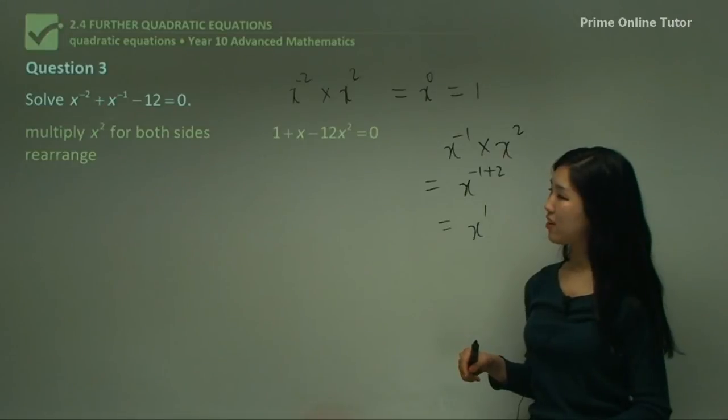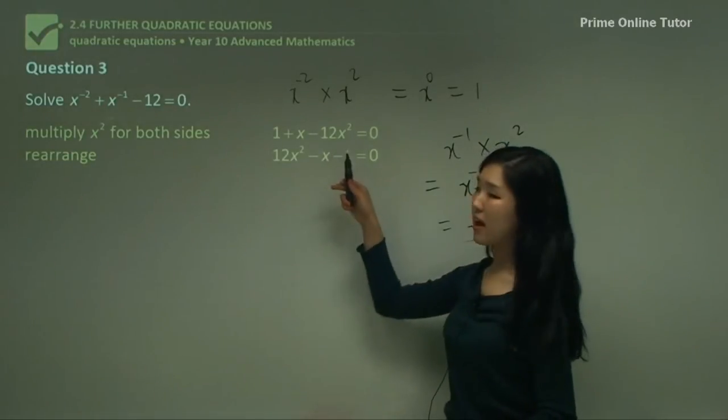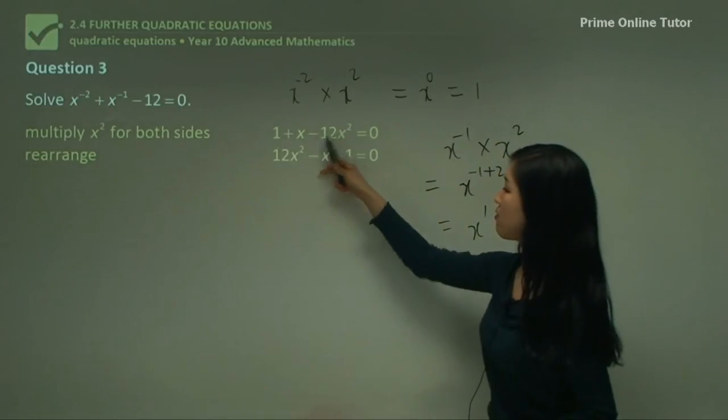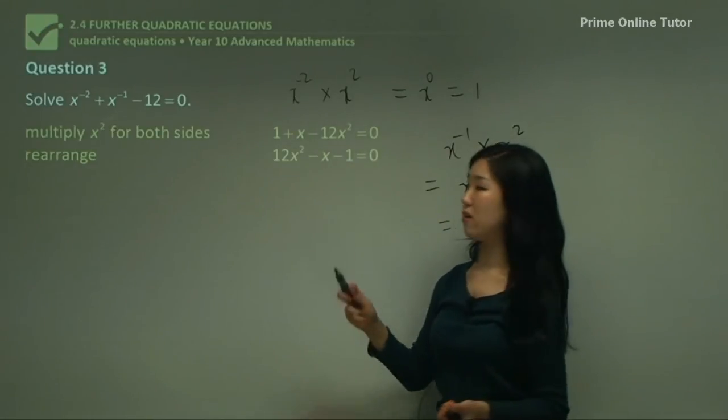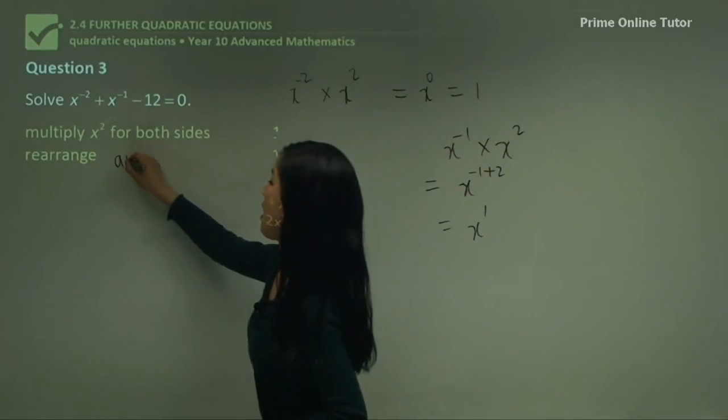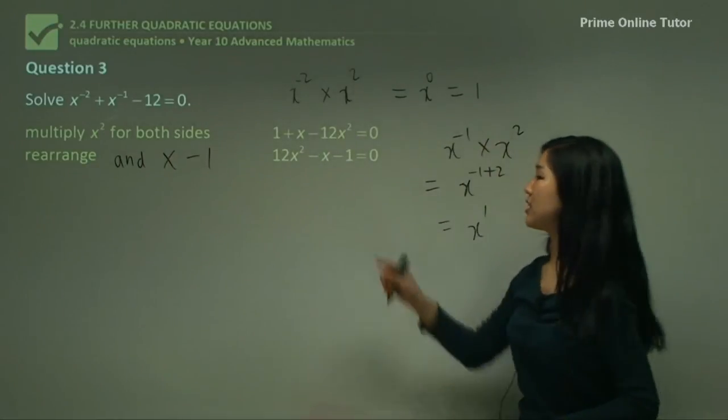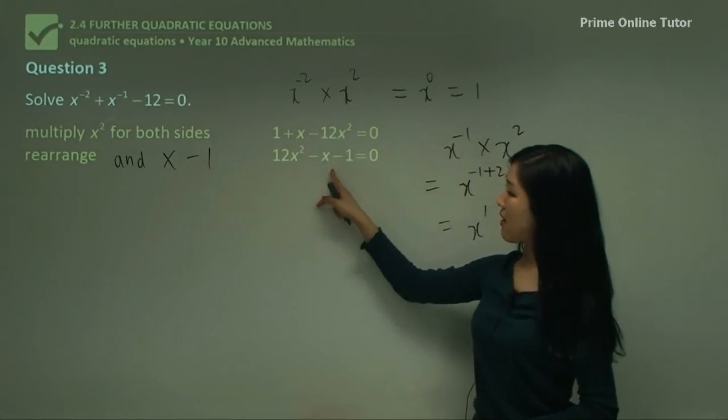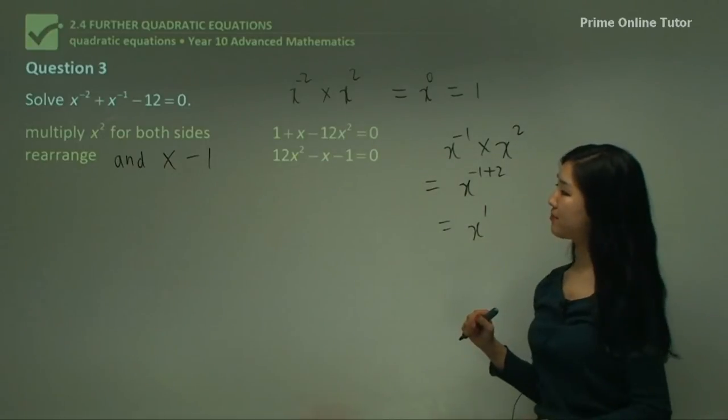Now I rearrange it. I'm going to rearrange it and change the sign, because I don't want to have negative in front of my x². So I'm going to multiply everything by -1 as well. So basically, I'll add an extra step and multiply -1. This will be positive 12x², the x will be -x, and 1 will be -1, and that's equal to 0.